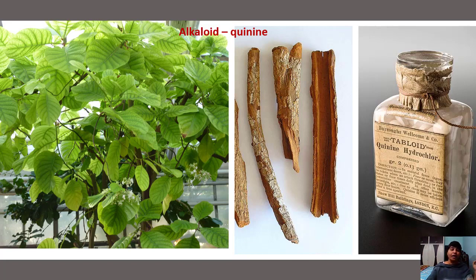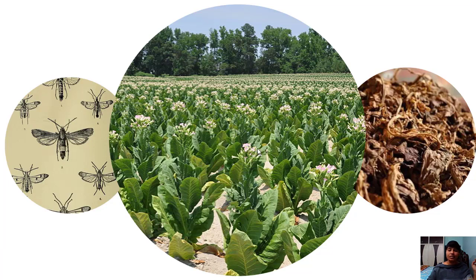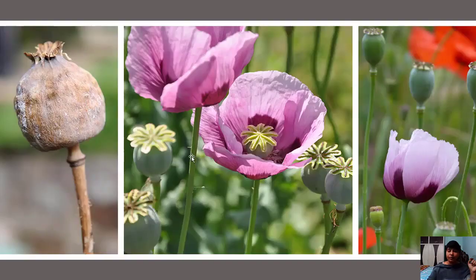Another alkaloid comes from Nicotiana tabacum — the tobacco plant. The leaves of this plant contain an alkaloid called nicotine. Nicotine is useful to kill insects.